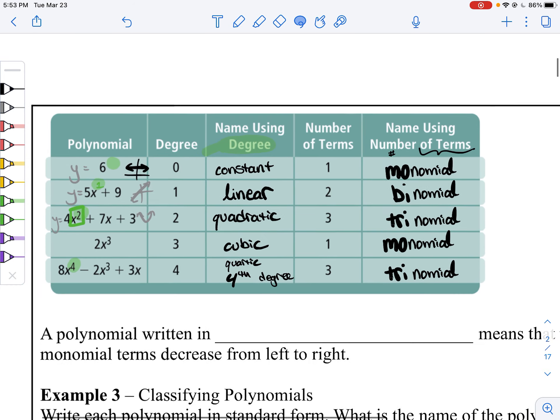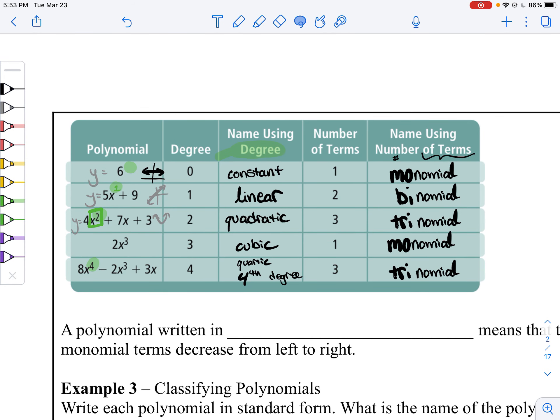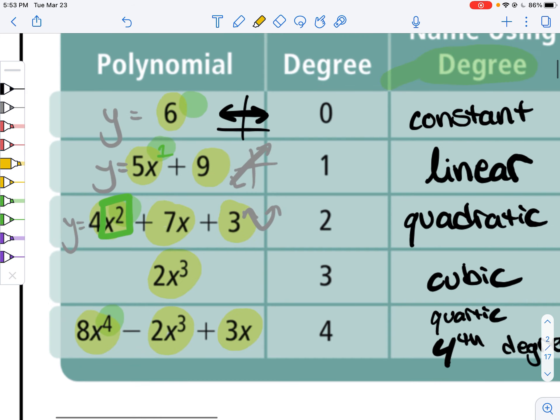You can tell how many terms it has by counting them. Each term is going to be separated by a plus or by a minus. So, that's why we've got one, two, three, one, two.